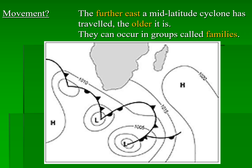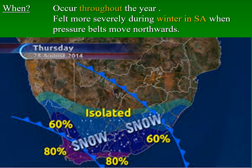The further east a mid-latitude cyclone has travelled, the older that particular mid-latitude cyclone is. If you look on the screen, you will notice that this mid-latitude cyclone has moved further east, and is therefore older than the mid-latitude cyclone following behind. It simply means that the older one developed first and has had more time to move in an easterly direction. When mid-latitude cyclones and specifically their fronts are joined in this way, we often speak about a family of mid-latitude cyclones.